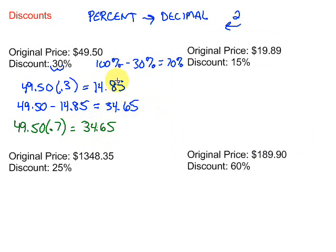So if we use that fact and we subtract the percent from 100% and we find this percent, then we don't have to do anything. It's just a one-step process. So let's take a look here at this next one and we'll try doing it the one-step way. The original price is $1348.35, discount of 25%.